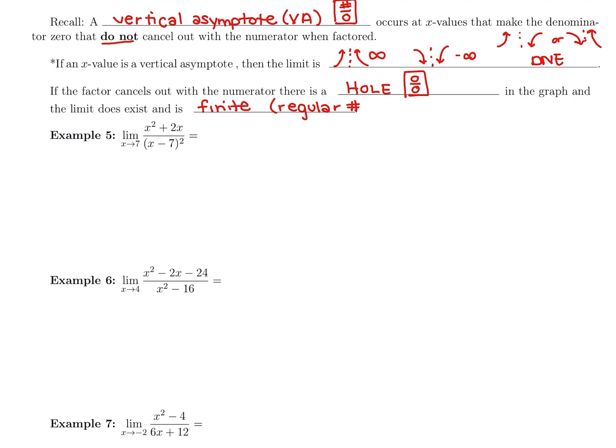It's not going to be DNE, infinity, or negative infinity like a vertical asymptote would be. So let's keep going and do more examples. We're going to try to plug in first, because that does give us our final answer sometimes. If not, we'll try to factor and cancel and then plug in. Or if factoring still makes us divide by 0, we'll make a table of approaching values. Our three methods: plug in, factor, make a table.